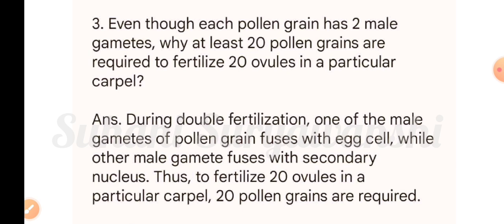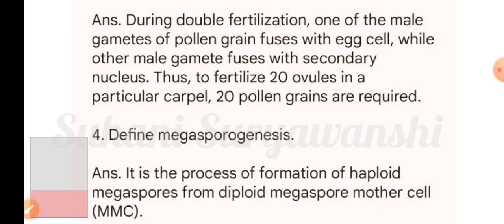During double fertilization, one of the male gametes of a pollen grain fuses with the egg cell while the other male gamete fuses with the secondary nucleus. Thus, to fertilize 20 ovules in a particular carpel, 20 pollen grains are required.